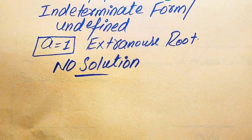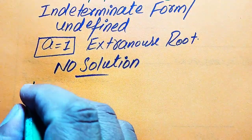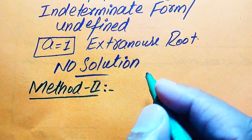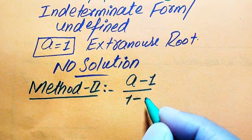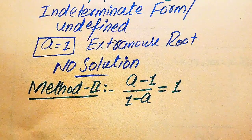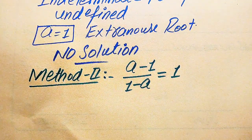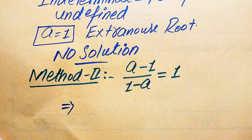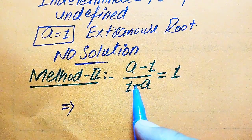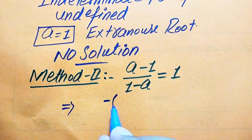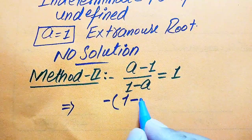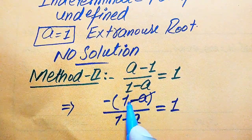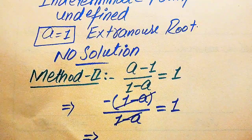Now we solve this problem using the second method. Our given equation is: (a minus 1) divided by (1 minus a) equals 1. In the second method, we directly get the solution. We factor out a negative sign from the numerator, giving us: negative (1 minus a) divided by (1 minus a) equals 1.